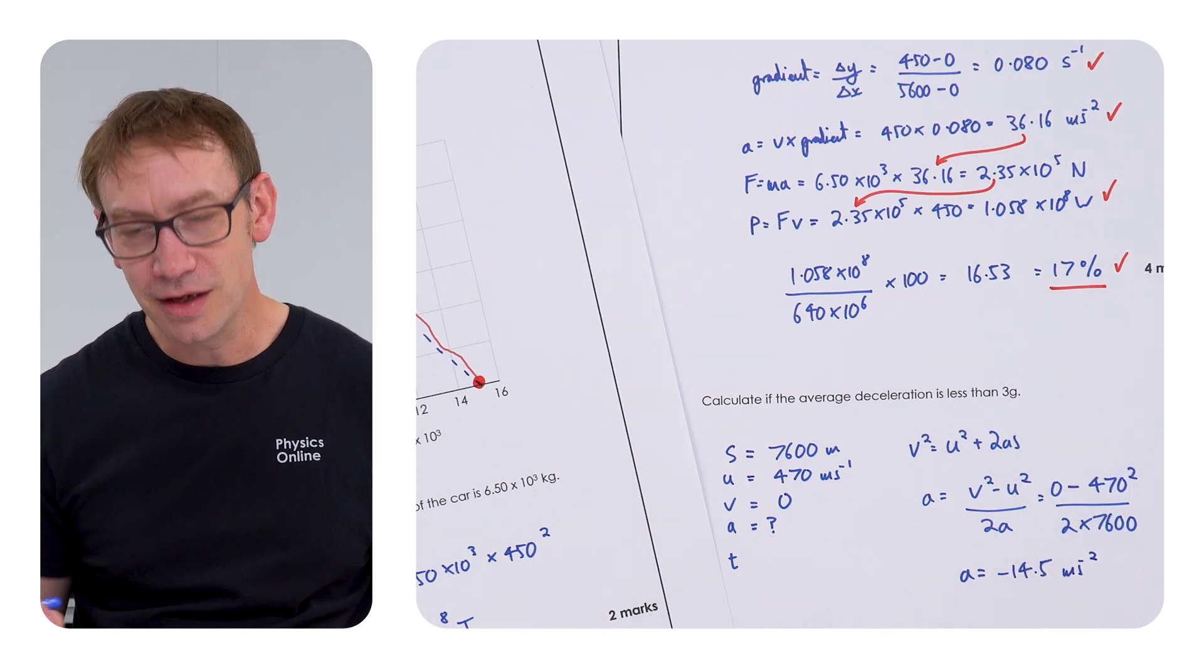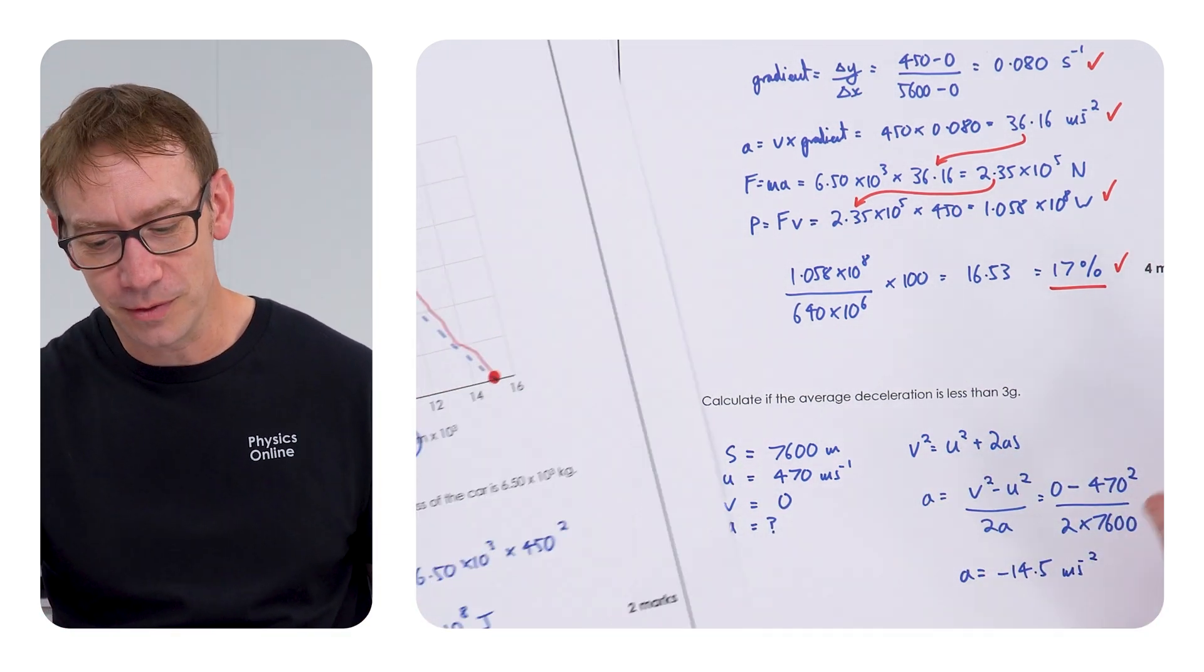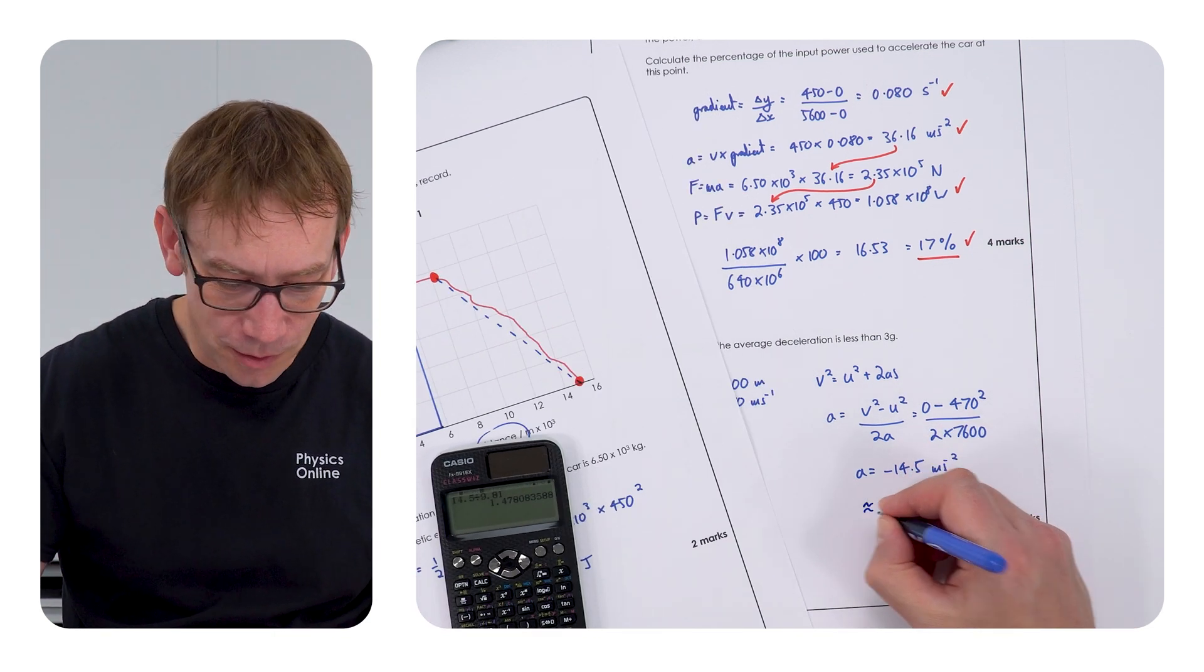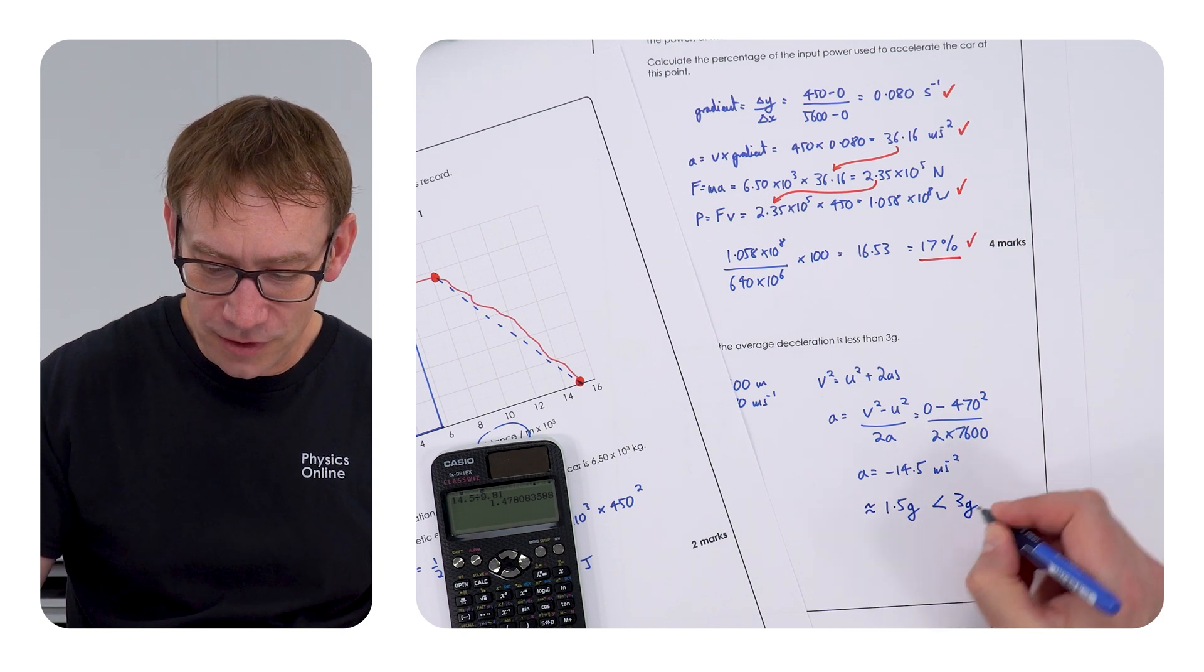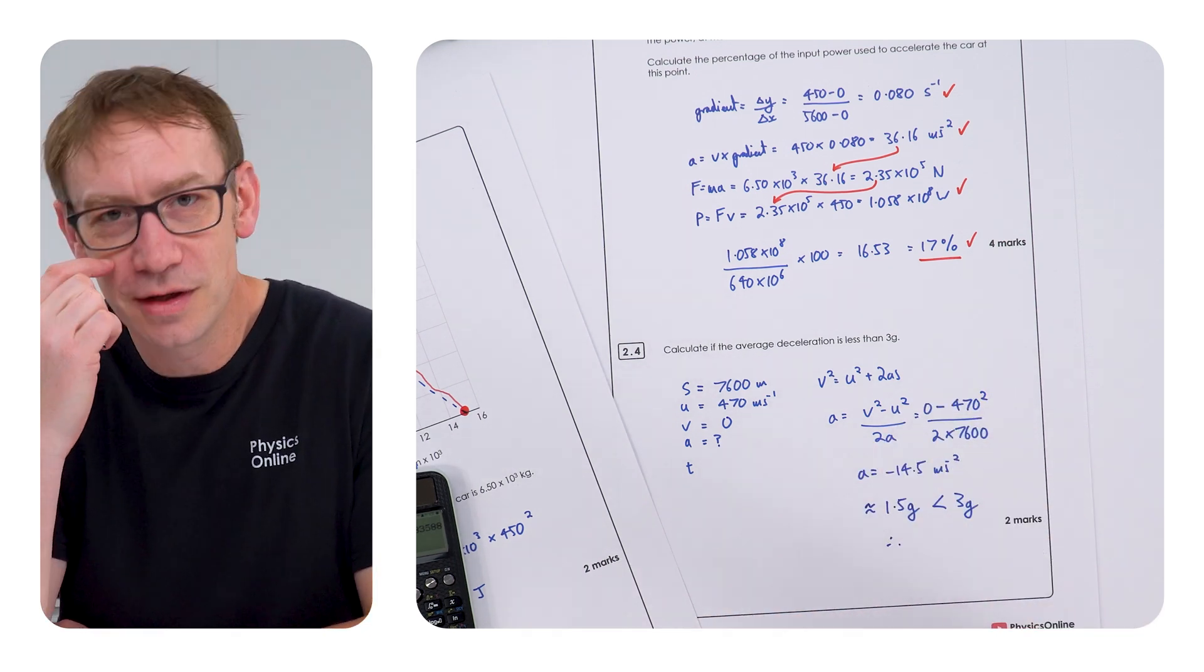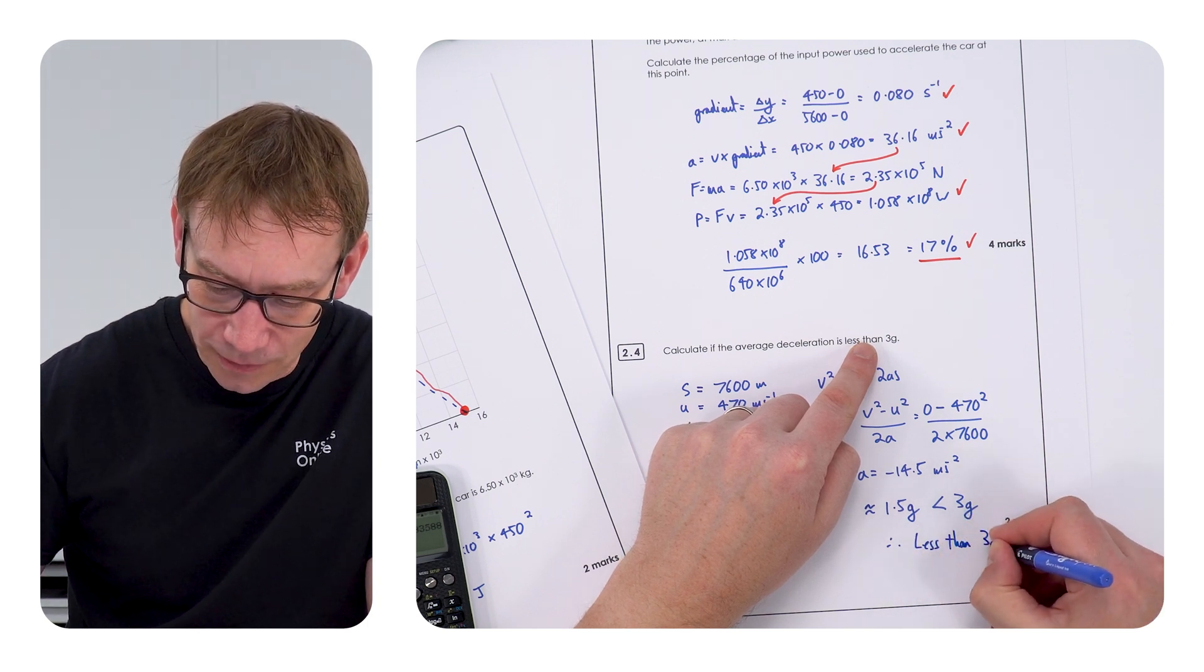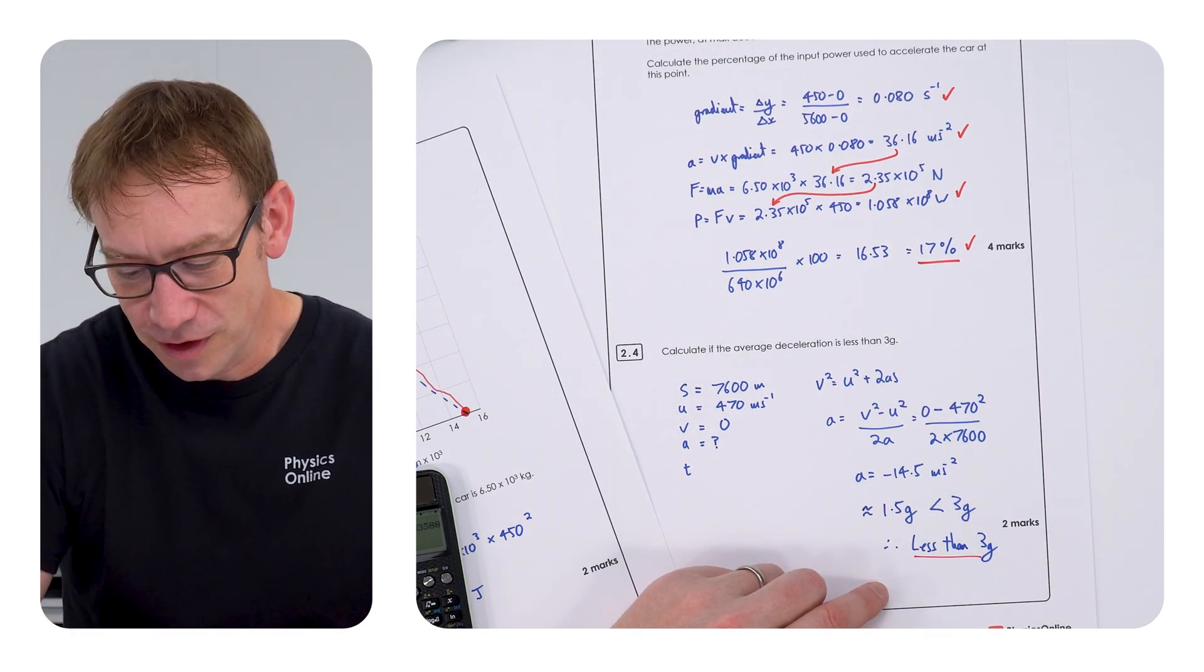Is that less than 3G? Well, it is. I mean, G is going to be 9.8. We want to say 3G is going to be about 30 metres per second squared. Of course, what we can do is just do 14.5 divided by 9.81. And we find that this is equal to approximately 1.5G, which is less than 3G. And therefore, we can actually do the calculation. And it's always important in the question to actually answer what it's asking you. Is this less than 3G? Therefore, the deceleration is less than 3G. And I think it's always worth thinking about a final statement that actually answers the question it's asking.